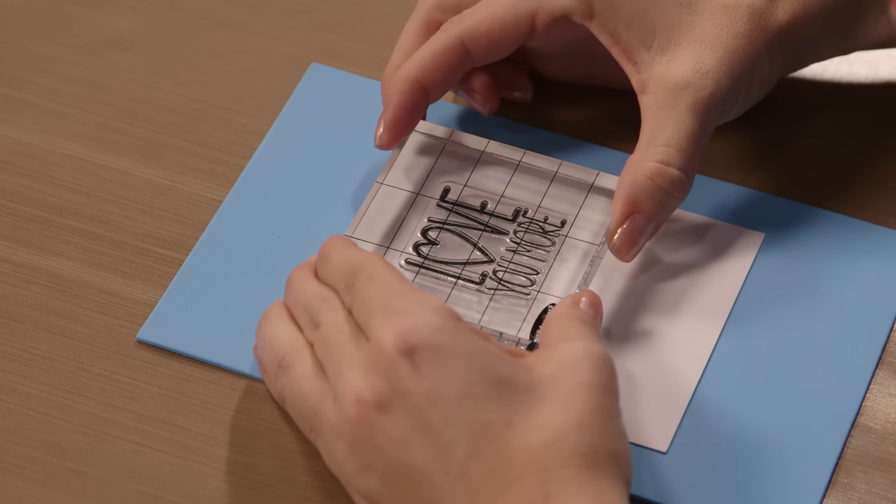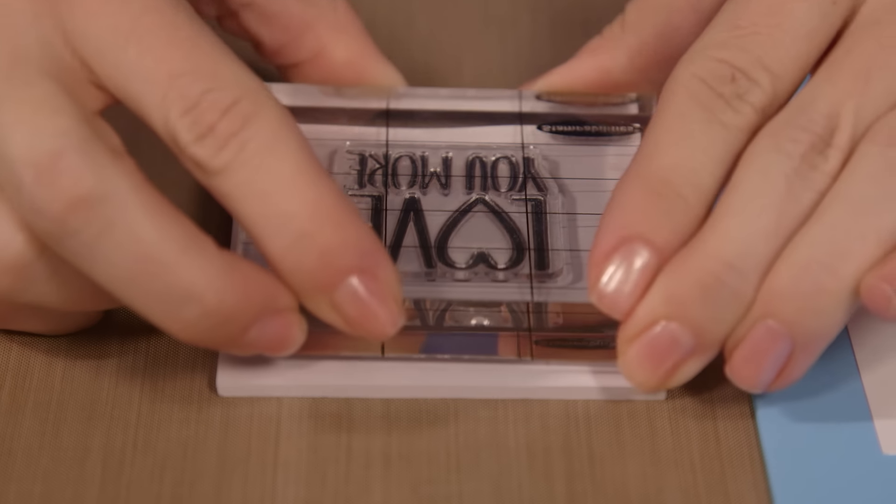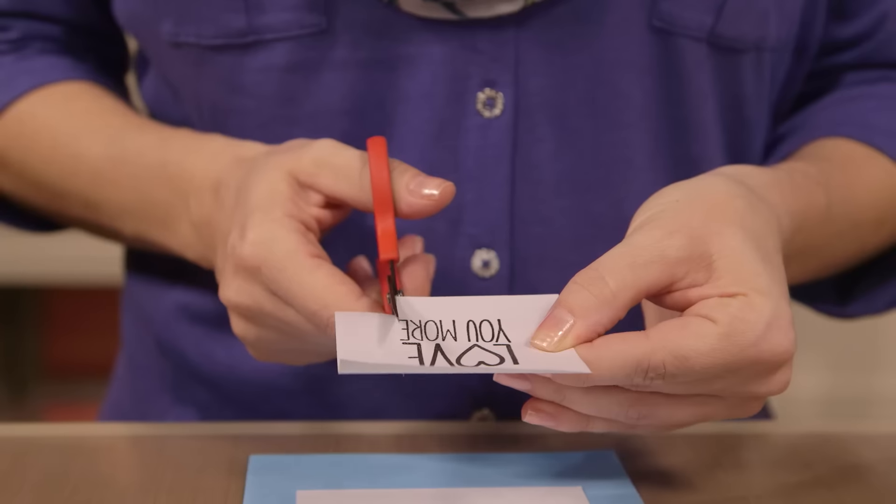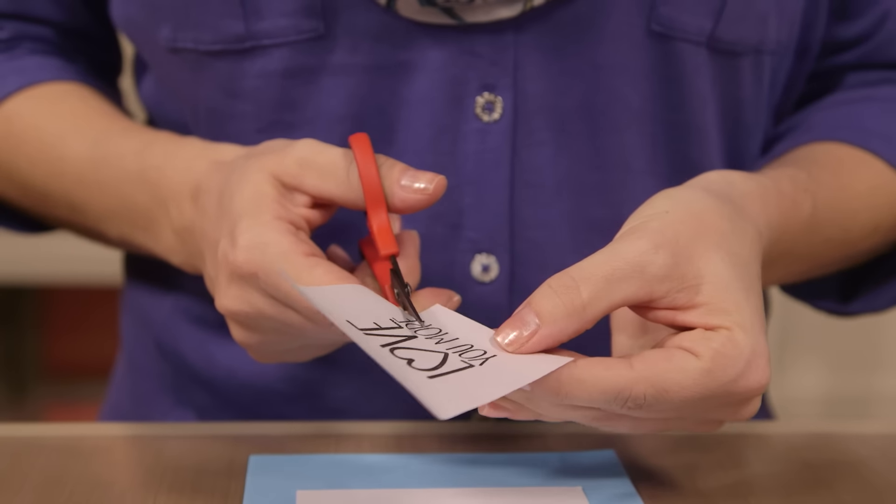First, I'll go ahead and stamp my project. Then, I'll stamp that same image on a sticky note or a piece of scratch paper. I'll cut it out now, getting as close to the edge of the image as possible.